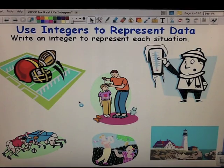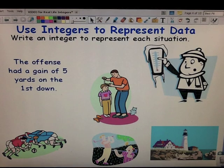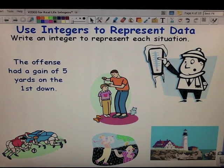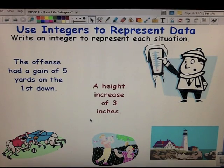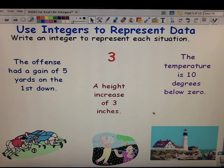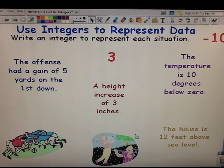We use integers to represent data in everyday life. For example, the Super Bowl is coming up. So the offense had a gain of 5 yards on the first down. A gain means it's going to be an increase or a positive number. Positive 5 would be the integer. A height increase of 3 inches would be a positive 3. The temperature is 10 degrees below zero. Below zero means it's going to be a negative number. Negative 10.